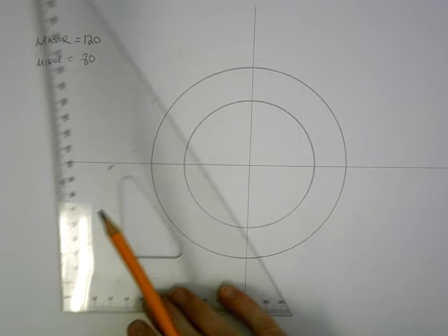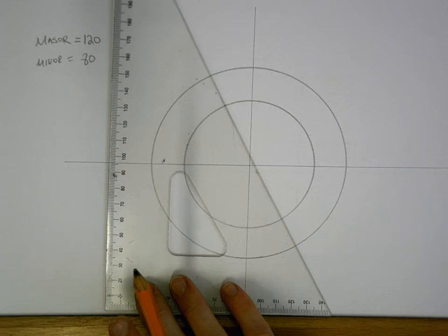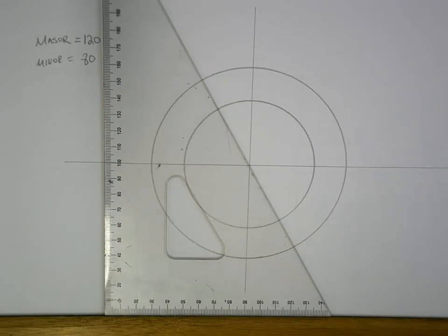When you're drawing an ellipse, you want to have your 30-60 degree set square, which is this one. And what we're going to do is we're going to draw all of the angles possible off that set square from our center point.